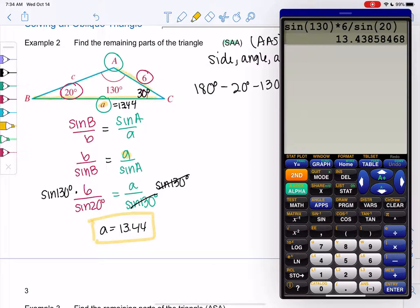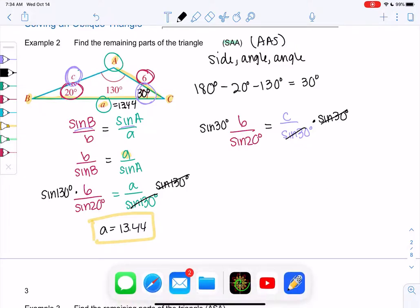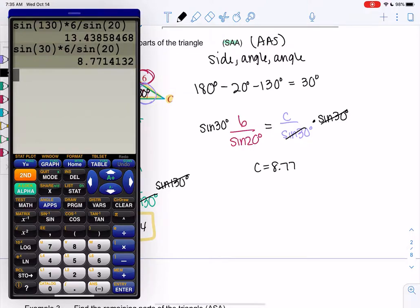We've found two of the sides and all of the angles. Just got to find one more side. We'll do the same ratio: 6 over sine 20 equals C over sine 30. You can flip it as long as both are sine on bottom or both on top to keep it proportional. We'll solve this by multiplying both sides by sine 30. Sine of 30 times 6 all over sine of 20, and C is 8.77. We've solved the triangle.